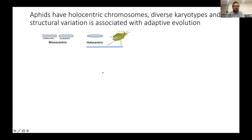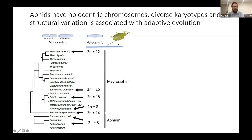Aphids have an unusual chromosome structure. Most species have monocentric chromosomes where centromeres are localized within either the middle or end of the chromosome, where the spindle fibers attach in mitosis and meiosis. However, in aphids and other Hemiptera, they have holocentric chromosomes — spindle fibers can attach diffusely across the chromosomes.